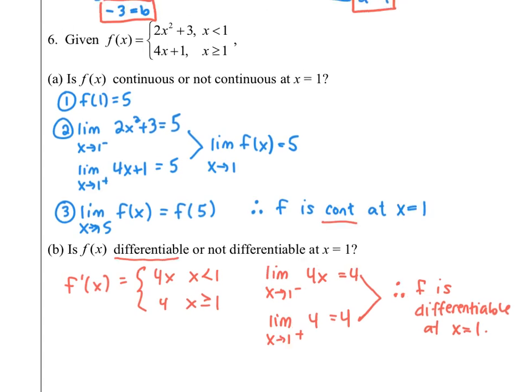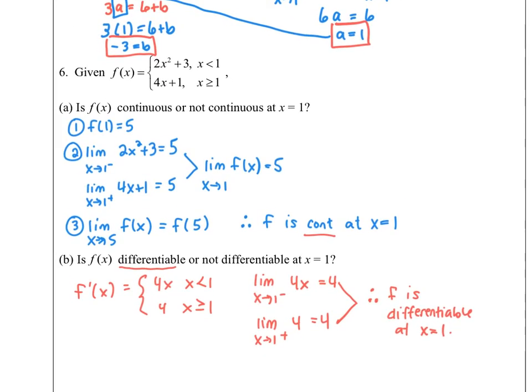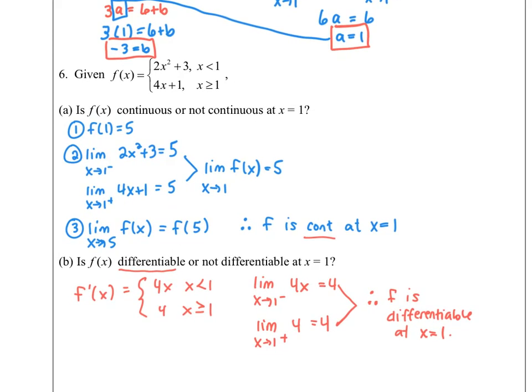The written part of your assignment for derivatives number four will look like number six. Go through all the steps: for continuity, review those three steps. If the function is not continuous, simply state f is not differentiable because it is not continuous. If it is continuous, proceed to the differentiability piece — find the derivative, then essentially perform step two of continuity using that derivative function.